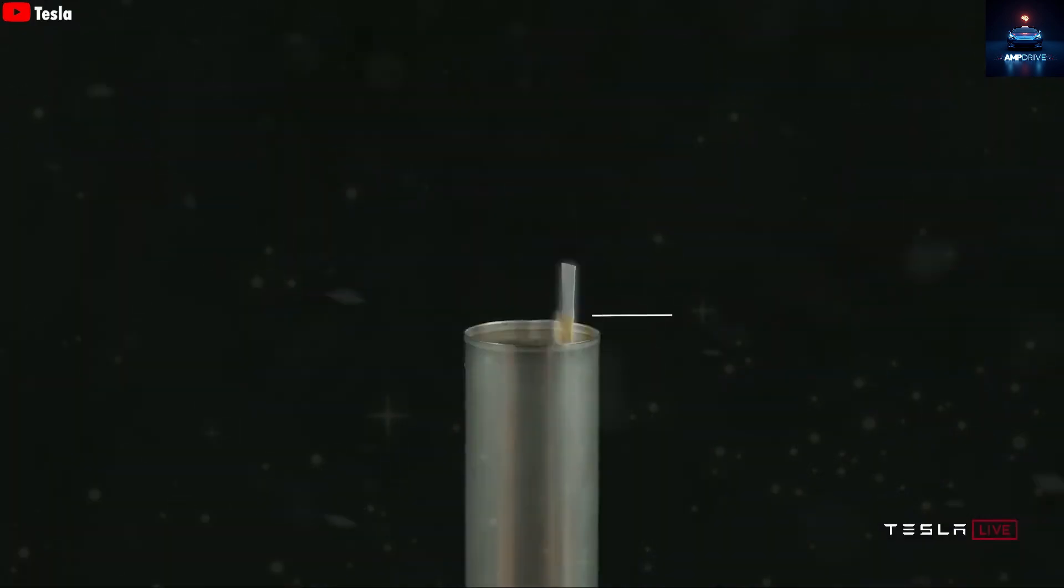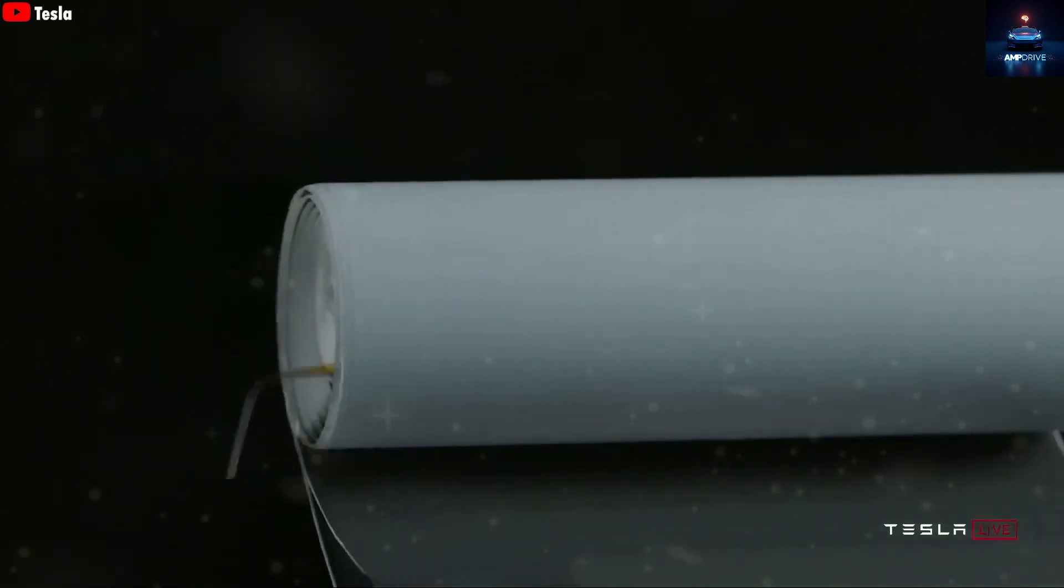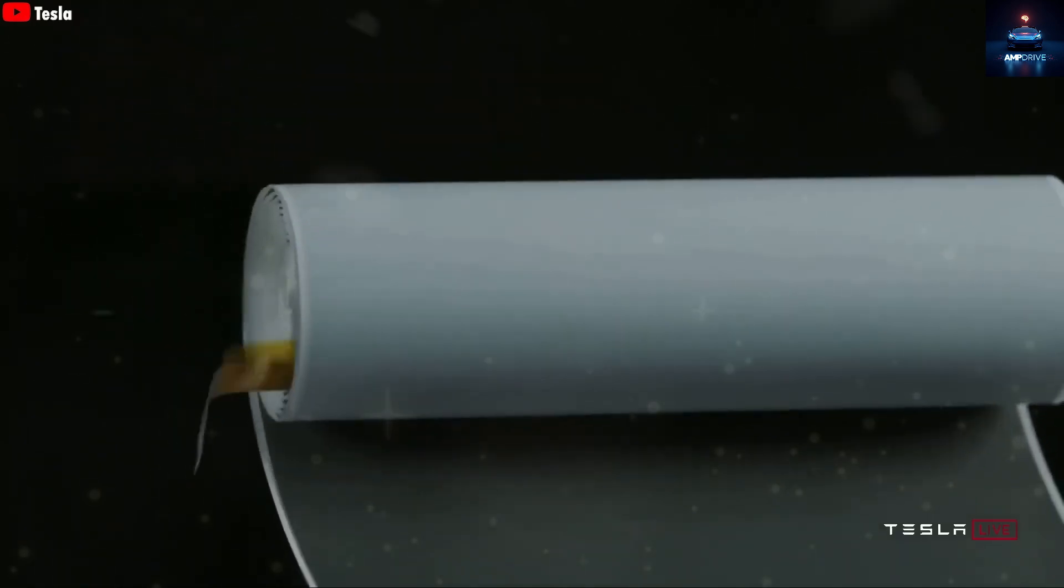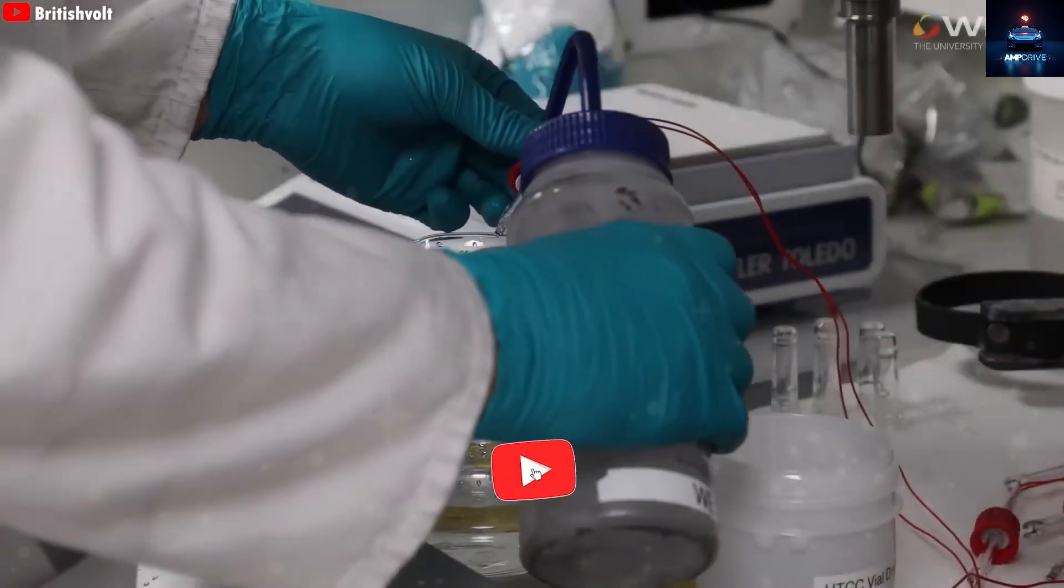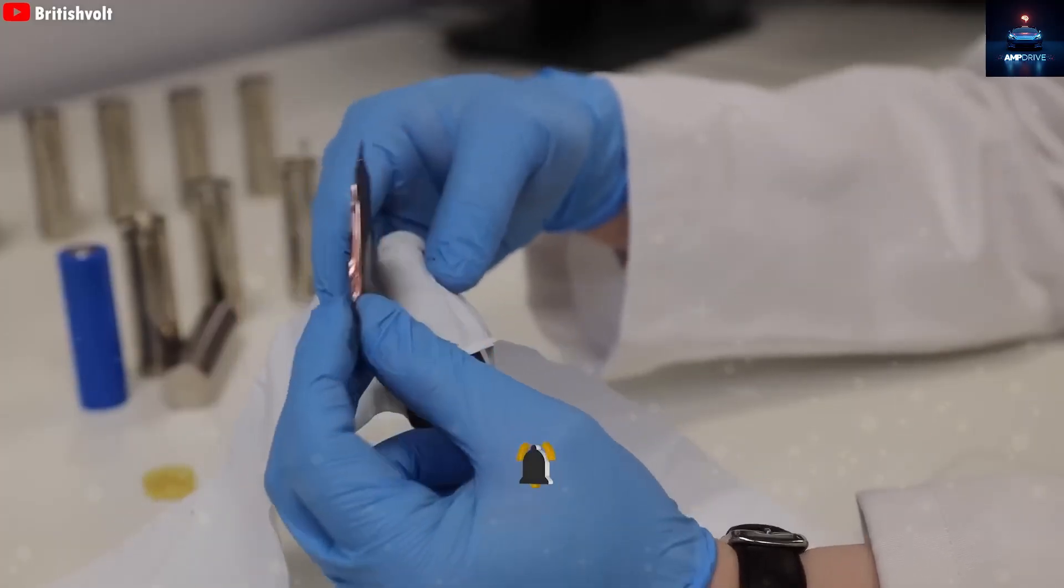What makes the 4680 really special is its unique structure and size, along with a tabless design that removes the traditional connectors inside the battery. This makes the battery more efficient by lowering internal resistance, raising energy density, and making the manufacturing process easier. All of this helps Tesla bring down the cost while improving overall performance.